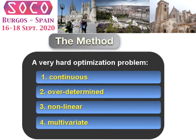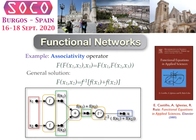This is a very hard optimization problem because it is continuous, over-determined, non-linear, and multivariate. So the approach followed in this work is to apply functional networks.